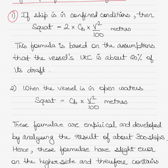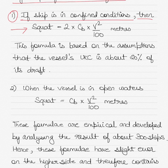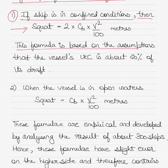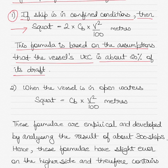If the ship is in confined conditions, then squat will be equal to 2 times the block coefficient multiplied by the square of the ship speed divided by 100. This formula is based on the assumption that the vessel's UKC, or under-keel clearance, is about 20% of its draft.